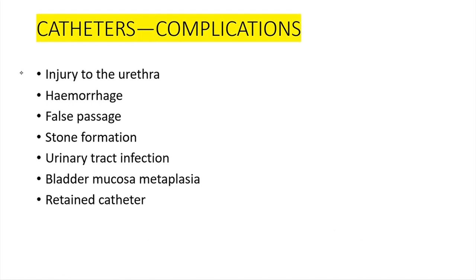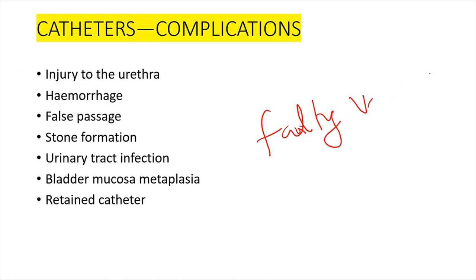Complications of urethral catheterization include injury to the urethra, hemorrhage, false passage, stone formation — as the catheter can serve as a nidus for infection and subsequent stone formation — urinary tract infection, bladder mucosa metaplasia, and retained catheter. Retained catheter is usually caused by a faulty valve. When unable to deflate the balloon, you transect the valve and the water in the balloon drains out.